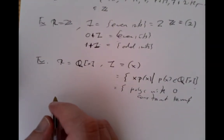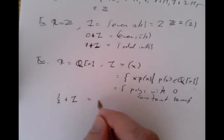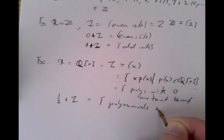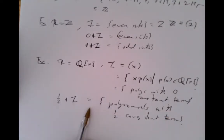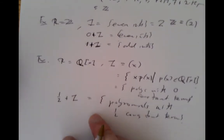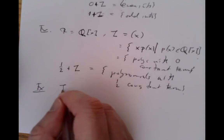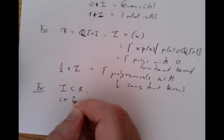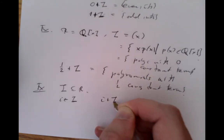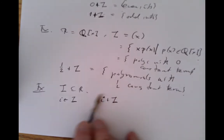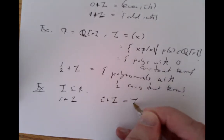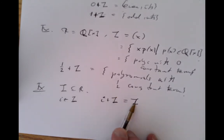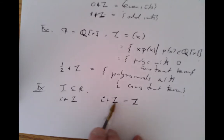Similarly, we could look at a translate. If we look at the translate 1/2 plus I, that's the set of polynomials with 1/2 constant term — we've translated those polynomials over by adding a half to every one of them. Note that in general, if we took any element of the ideal and translated by it, it wouldn't do anything, because adding an element of the ideal to every element of the ideal gives you just the ideal back again — it's closed under sums.